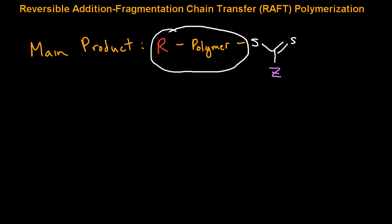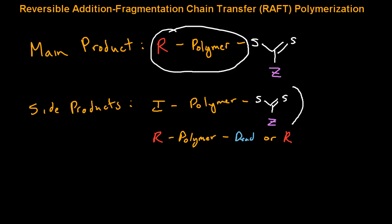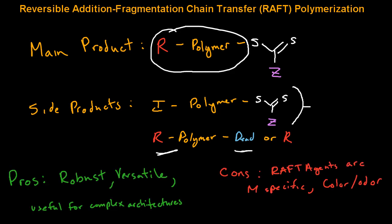However, there are some side products when going through a RAFT polymerization. Those side products will include some chains that are initiated by the initiator species, but will have the thiocarbonyl-thio end group. There will also be some chains that will be initiated by the R group from the RAFT agent, but on the other end will possibly have an R group or an N group that cannot undergo further chain extension.